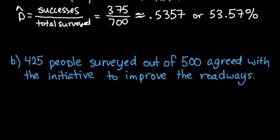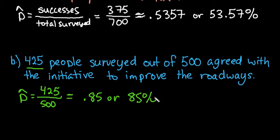Let's find another one. For this one we're finding the point estimate for this situation: 425 people surveyed out of 500 agreed with the initiative to improve the roadways. Again we would just take our p hat, we would take our number of successes, so that would be 425 out of 500. This one ends up being an exact decimal so you don't have to round. This one ends up being 0.85 or you could say 85%, so if I were using this as my point estimate I could say approximately 85% of people agree with the initiative to improve the roadways.